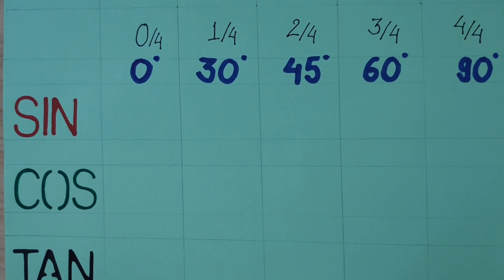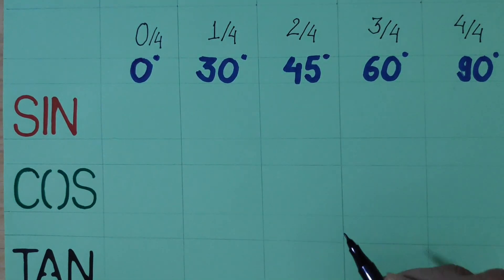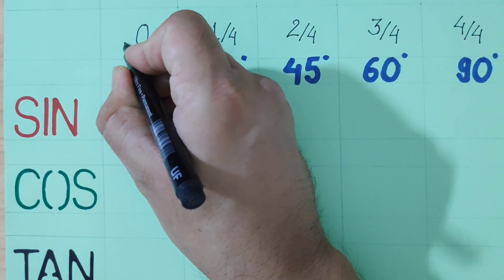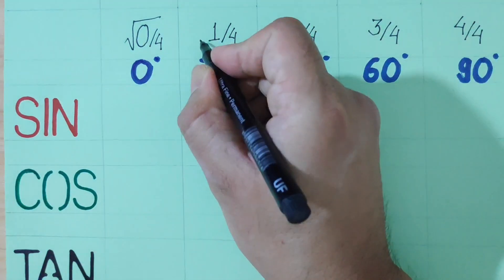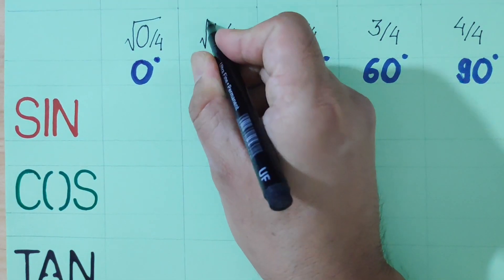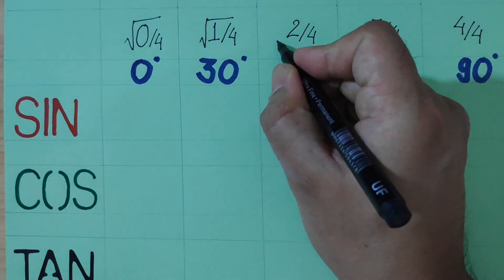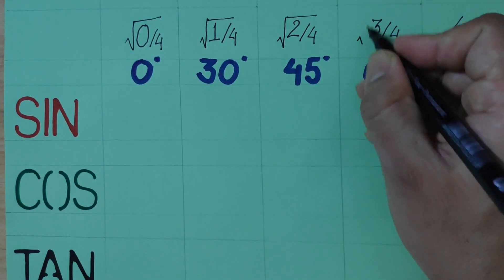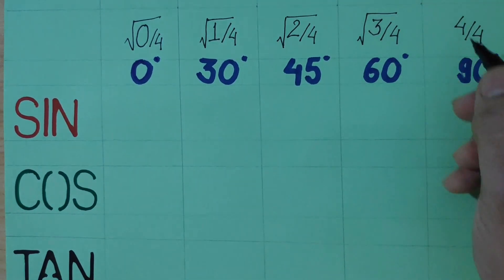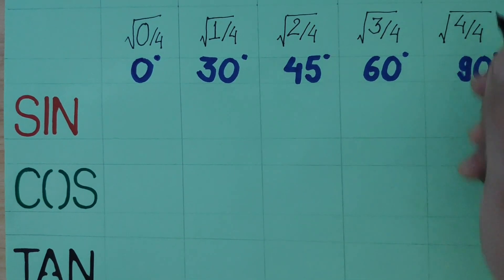We are going to take the square root of each fraction. So square root of 0 over 4, square root of 1 over 4, square root of 2 over 4, square root of 3 over 4, and square root of 4 over 4.